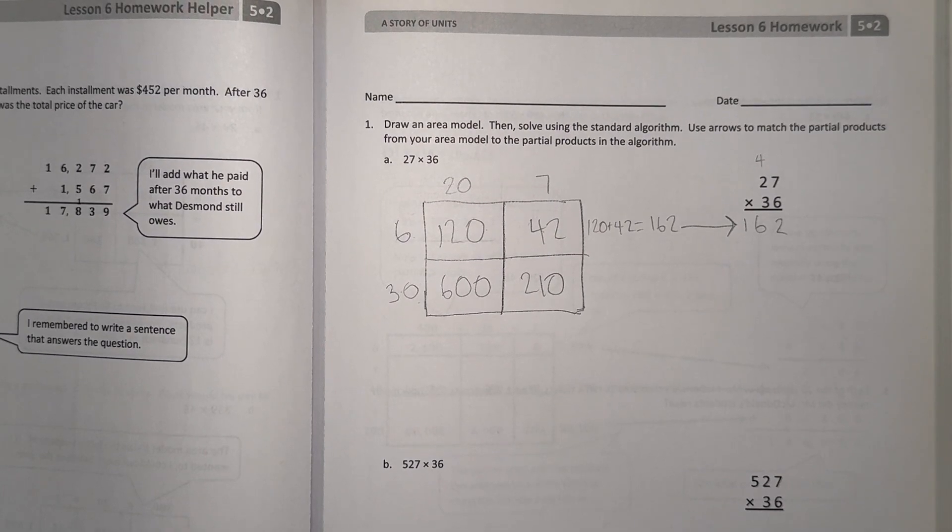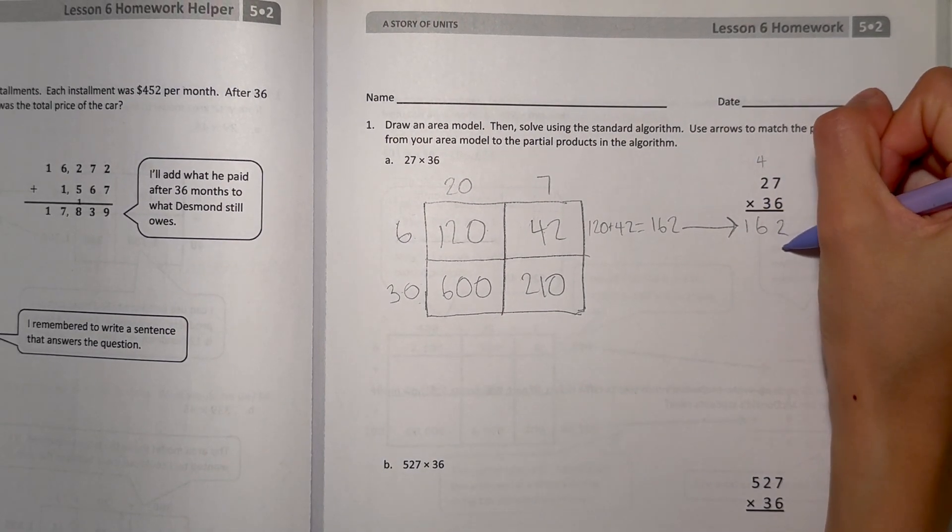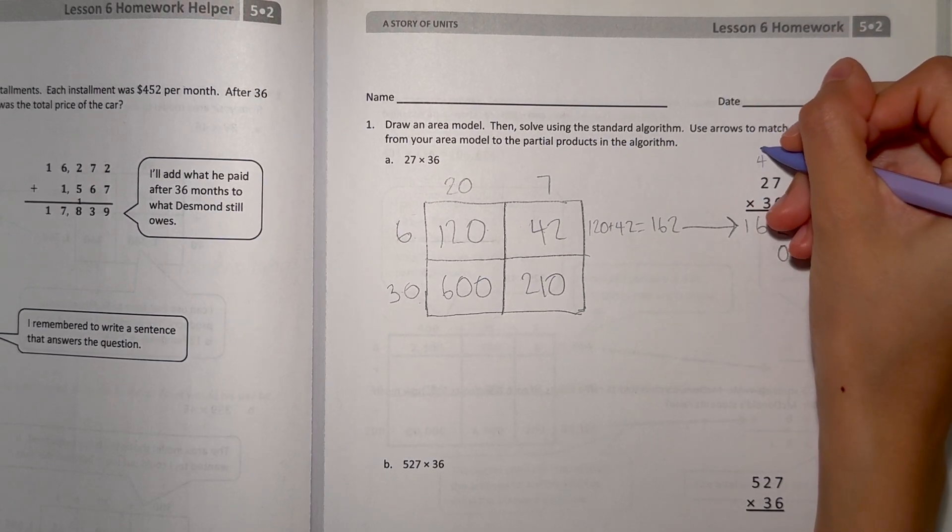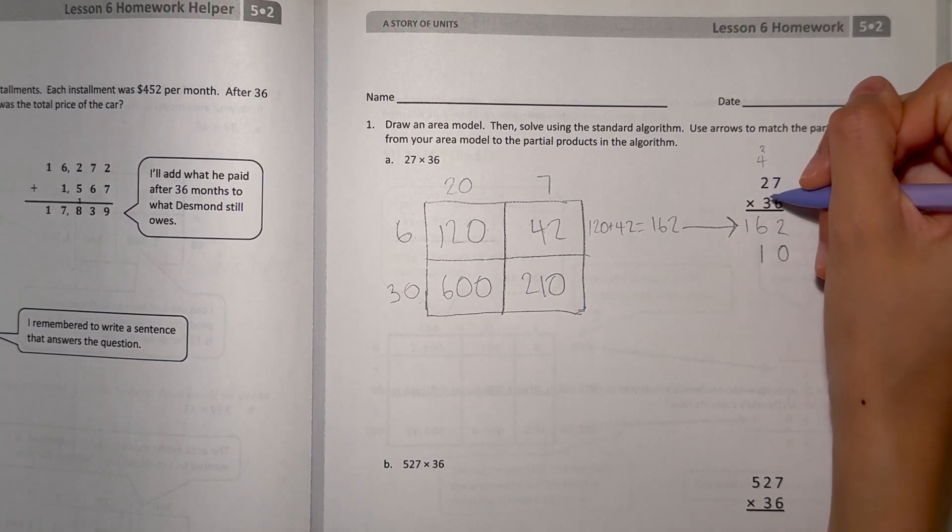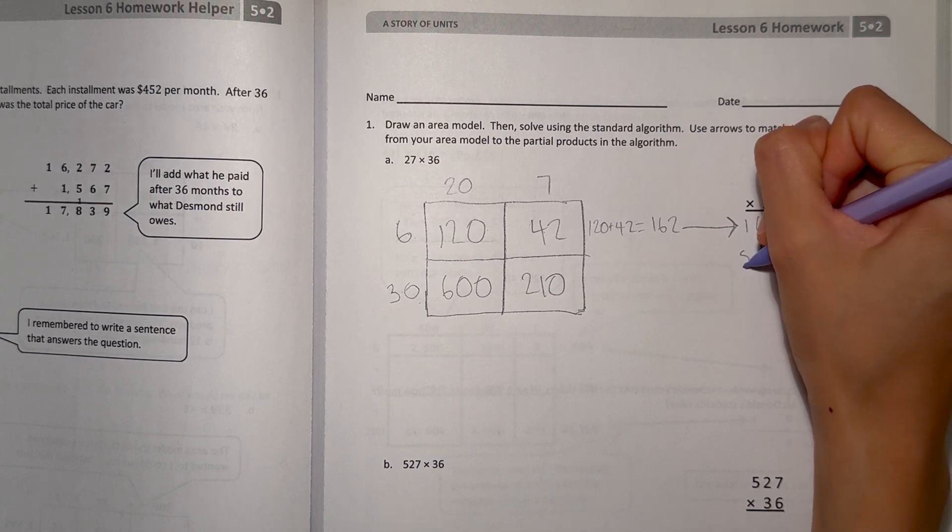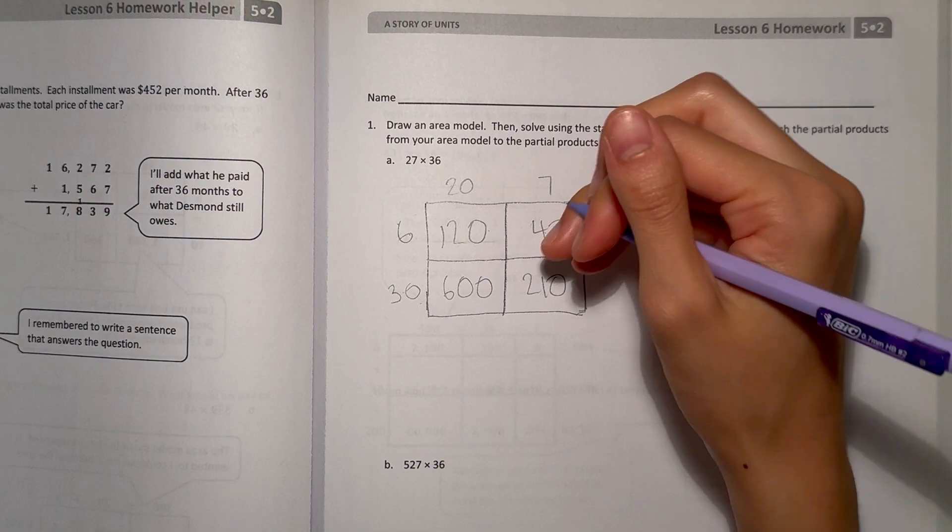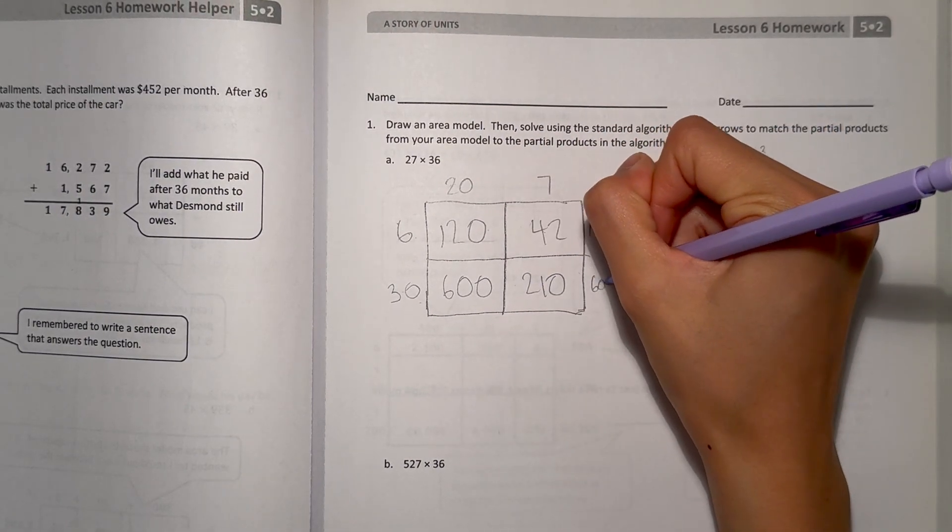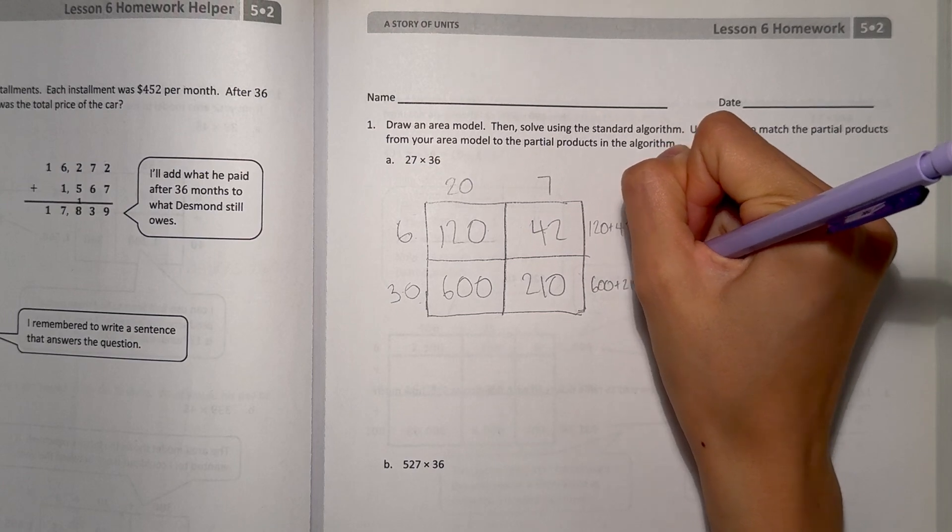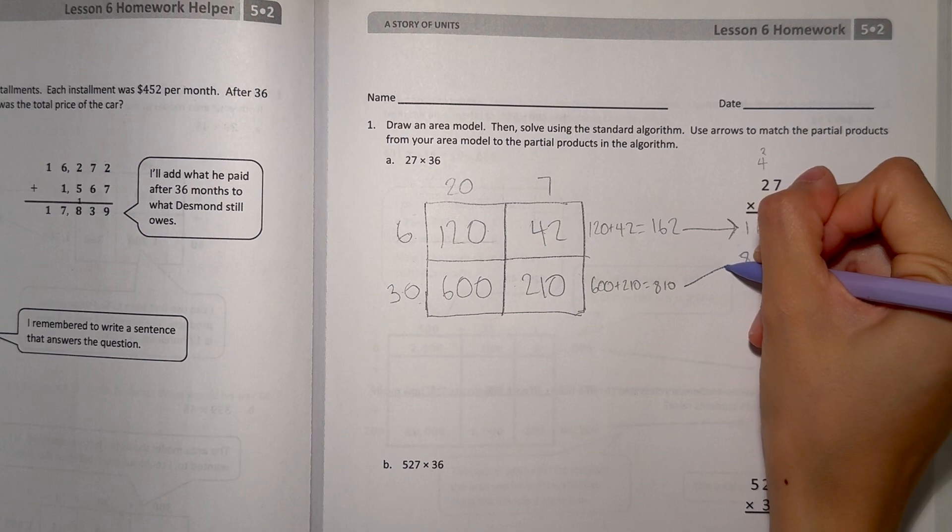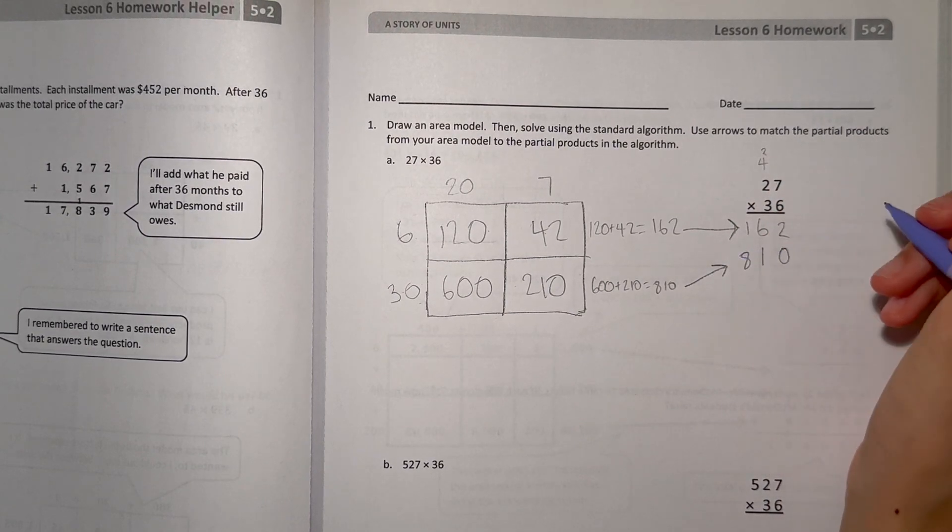Now let's move on to 27 times 30. We add a 0 at the end for the 30. 7 times 3 is 21. And 2 times 3 is 6 plus 2 is 8. 810. Now let's look at the bottom half of our area model. 600 plus 210 equals 810. So this also matches the 810 here in our standard algorithm.